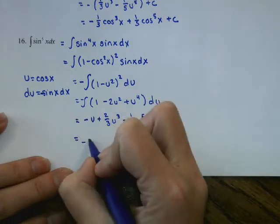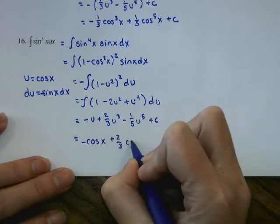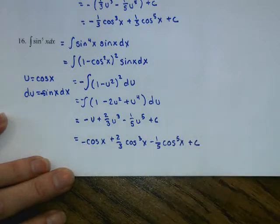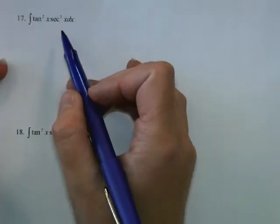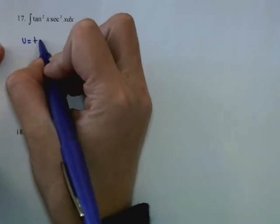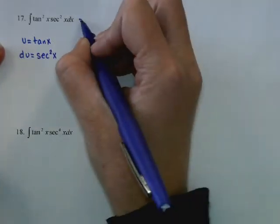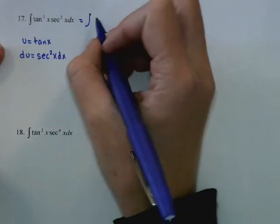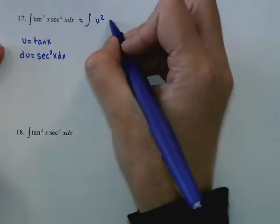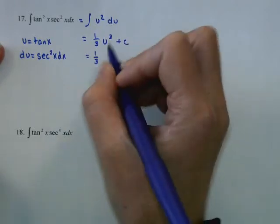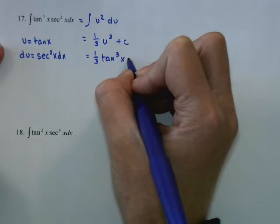For tangent and secant integrals, recall that the derivative of secant is secant tangent and the derivative of tangent is secant squared. For the integral of tangent squared times secant squared, let u equal tangent, so du equals secant squared dx. The integral becomes u squared du, giving one third u cubed plus C, or one third tangent cubed plus C.